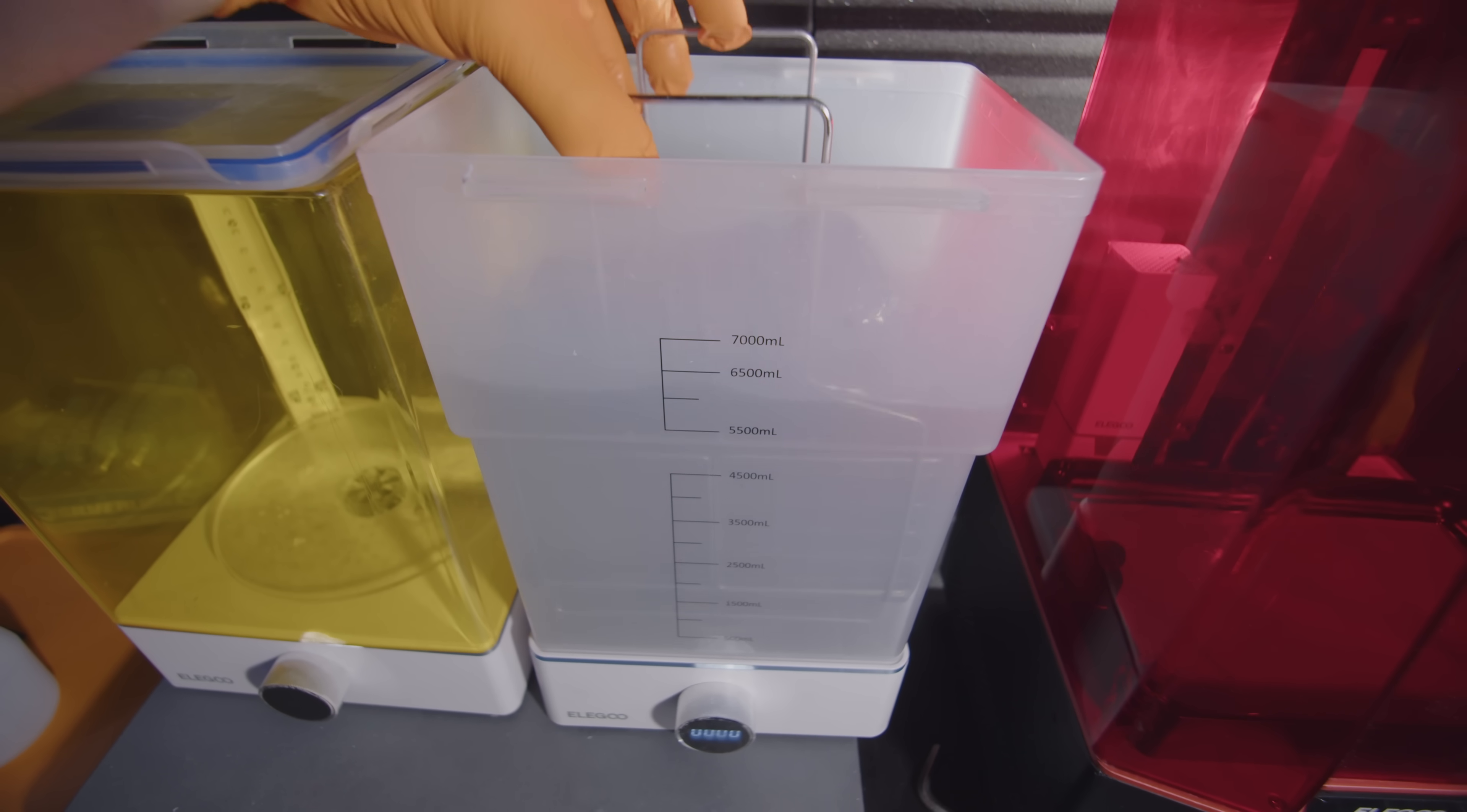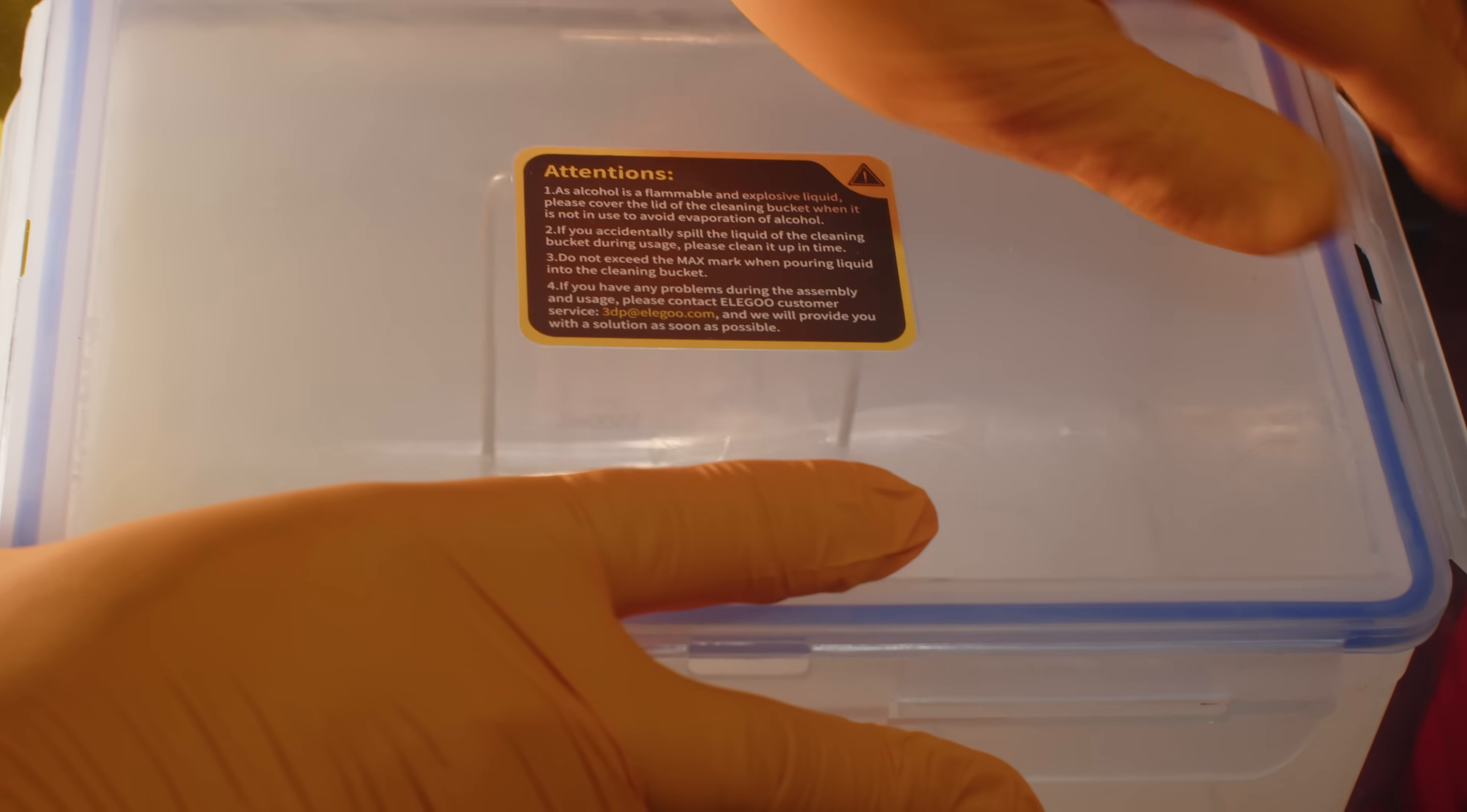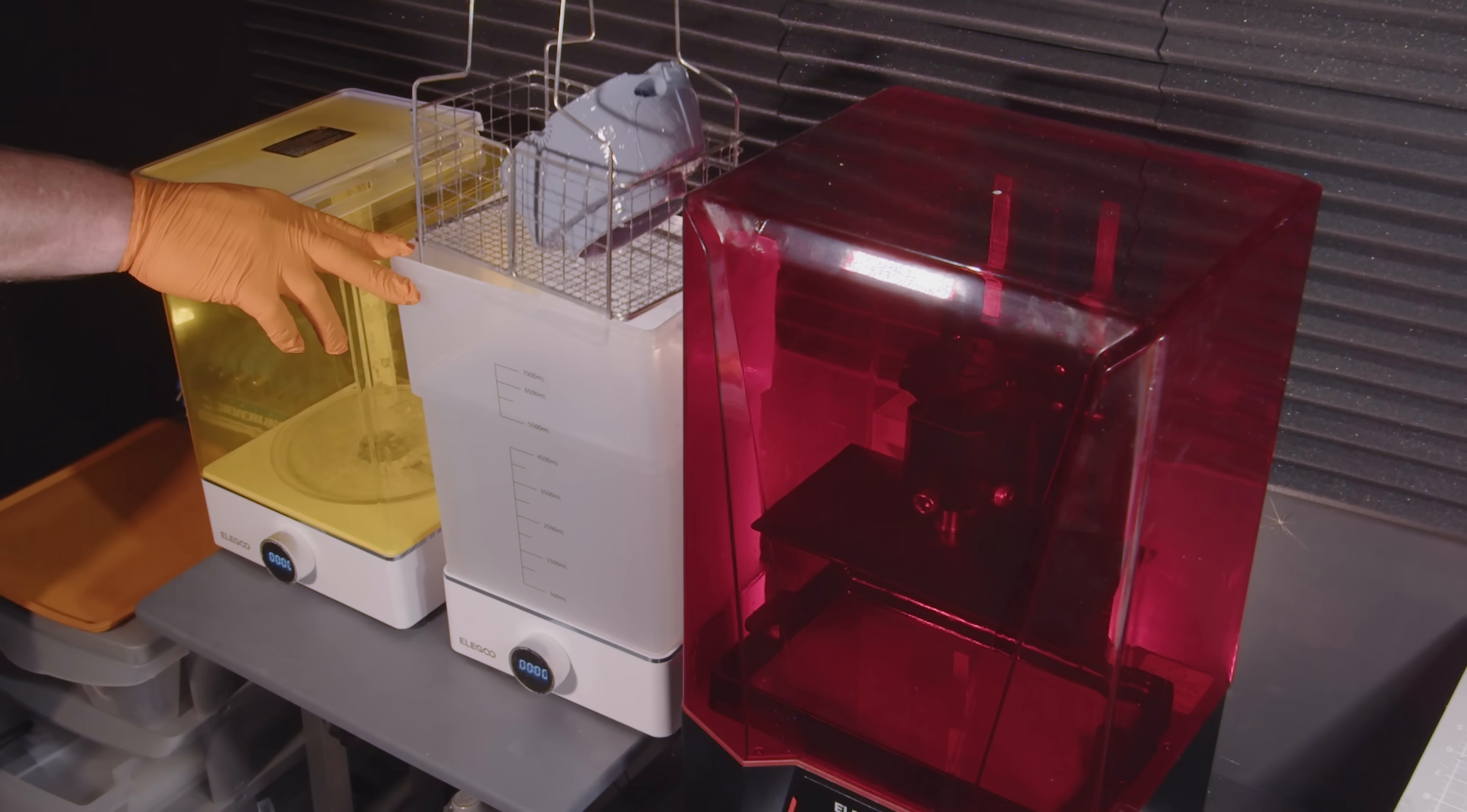We take our printed part and now wash it, to remove the residual uncured resin from its surface and inside of its hollow center. I do this by putting the part in the Elegoo washing station. This is a container filled with isopropyl alcohol that helps dissolve the uncured resin from the part. The container has a stirring blade at the bottom that agitates the chemical in the container, which in turn thoroughly washes and releases the uncured resin.